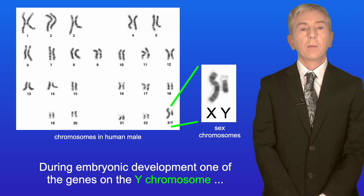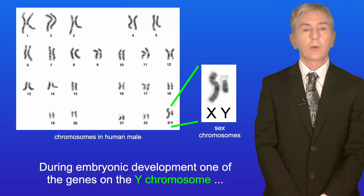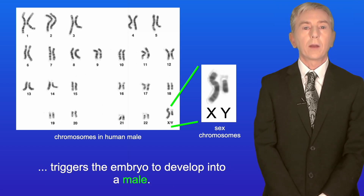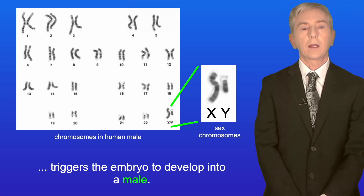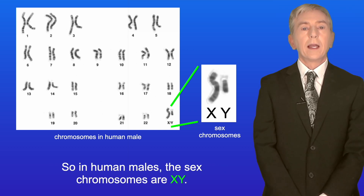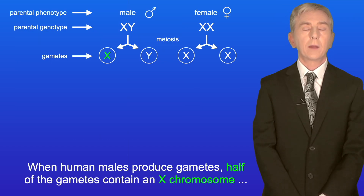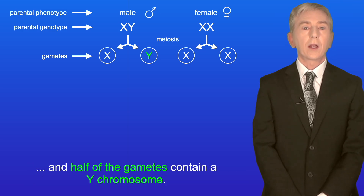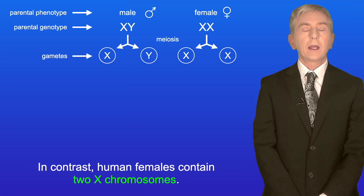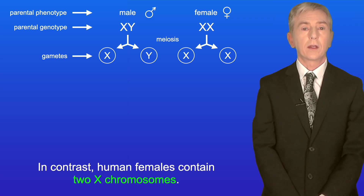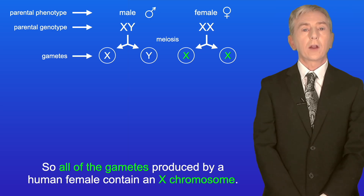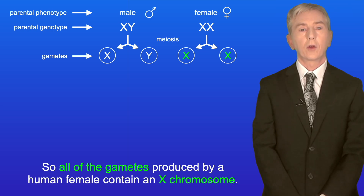During embryonic development, one of the genes on the Y chromosome triggers the embryo to develop into a male. So in human males the sex chromosomes are X and Y. When human males produce gametes, half of the gametes contain an X chromosome and half contain a Y chromosome. In contrast, human females contain two X chromosomes, so all of the gametes produced by a human female contain an X chromosome.